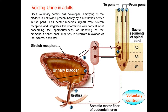Voiding urine in adults: once voluntary control has developed, emptying of the bladder is controlled predominantly by a micturition center in the pons. This center receives signals from stretch receptors and integrates this information with cortical input concerning the appropriateness of urinating at the moment; it sends back impulses to stimulate relaxation of the external sphincter. The first urge to pass urine is felt at 150 ml, and a marked sense of fullness or discomfort is felt at 400 ml.